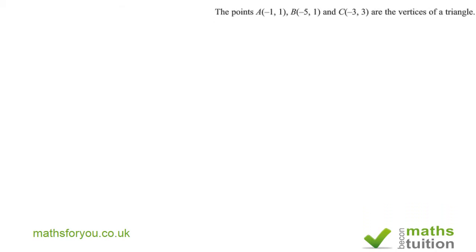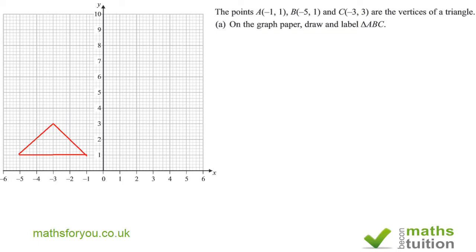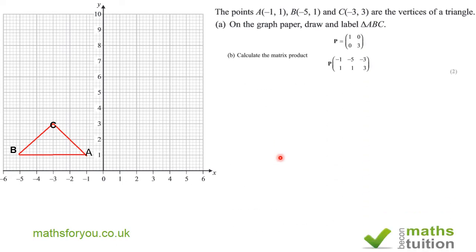The question has given us we've got to draw the triangle: A is (-1,1), B is (-5,1), and C is (-3,3). These are the vertices of a triangle and it says on the graph paper draw triangle ABC — that's the first part, and for that you get one mark. I do apologize for the positioning of C, because the next triangle is going to be drawn nearby.